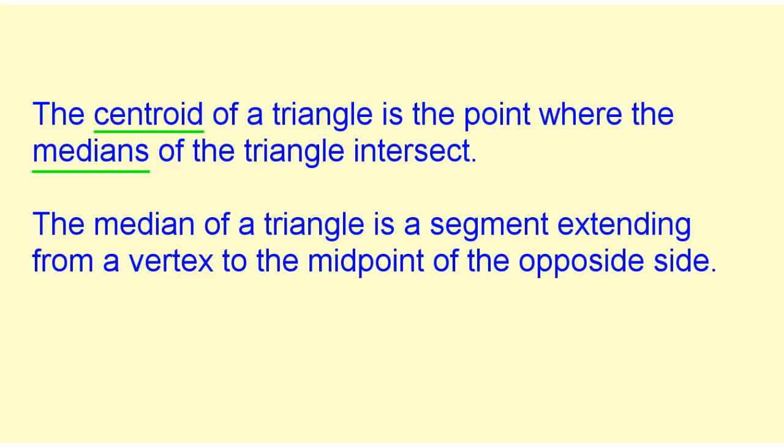The centroid of a triangle is the point where the medians of the triangle intersect. The median of a triangle is a segment extending from a vertex to the midpoint of the opposite side.